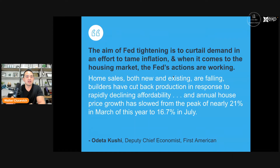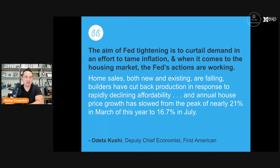Here's a quote from Deputy Chief Economist for First American, Odetta Kushi: 'The aim of Fed tightening is to curtail demand in an effort to tame inflation, and when it comes to the housing market, the Fed's actions are working.' Home sales — both new and existing — are falling. Builders have cut back production in response to rapidly declining affordability, and annual house price growth has slowed from a peak of nearly 21% in March to 16.7% in July.